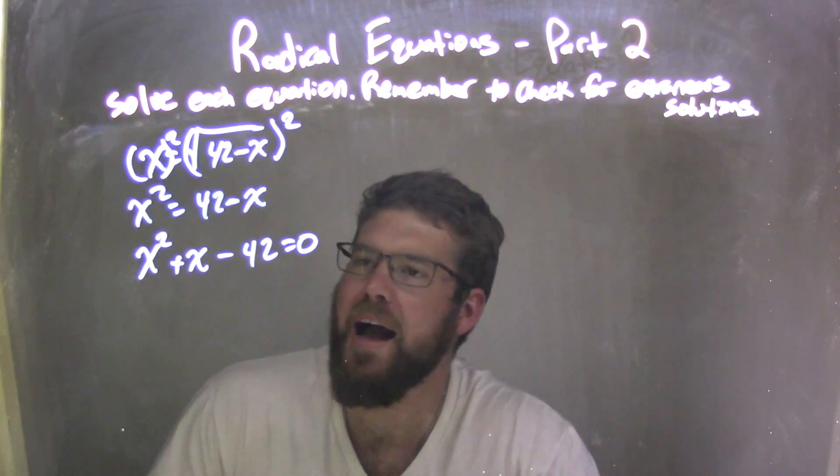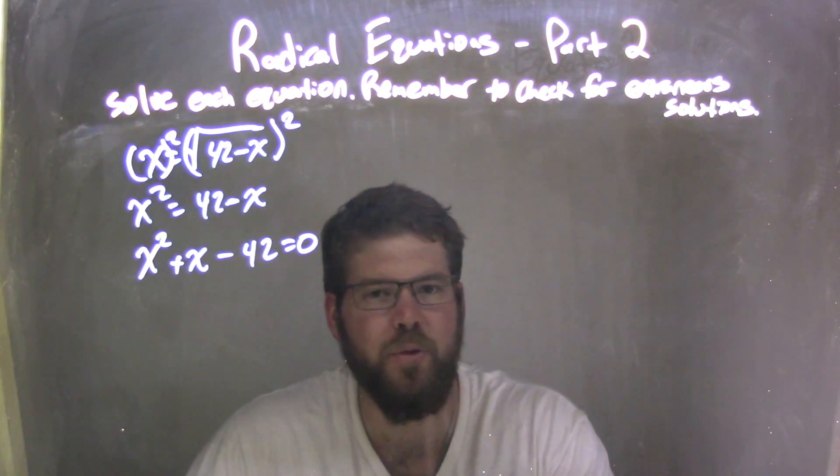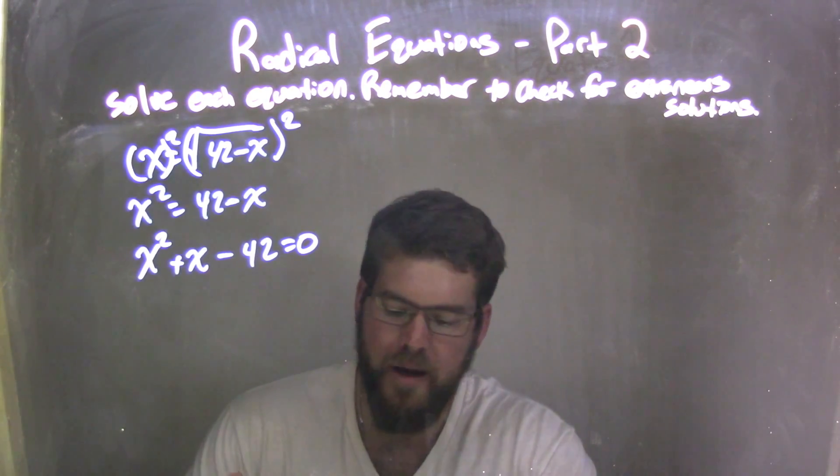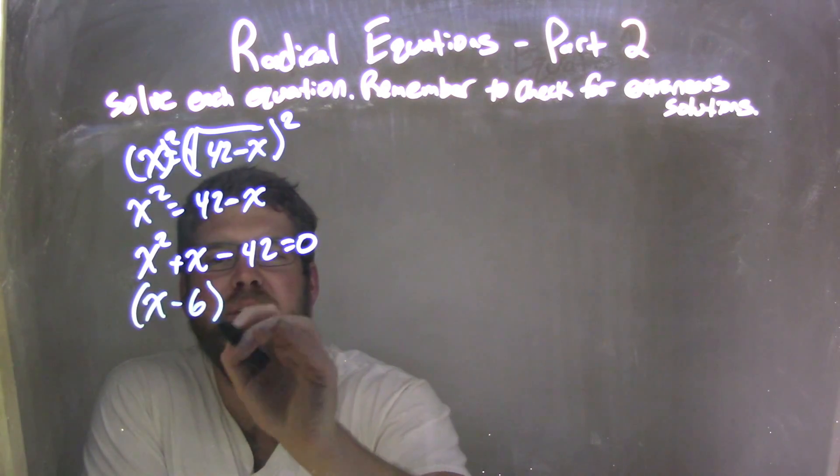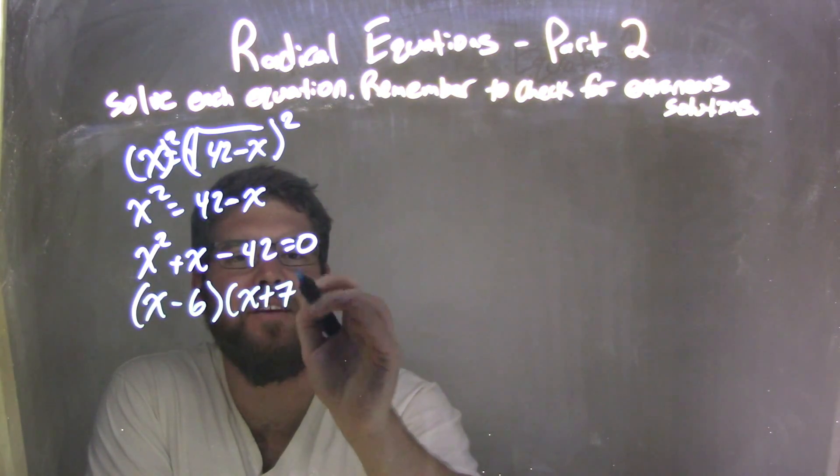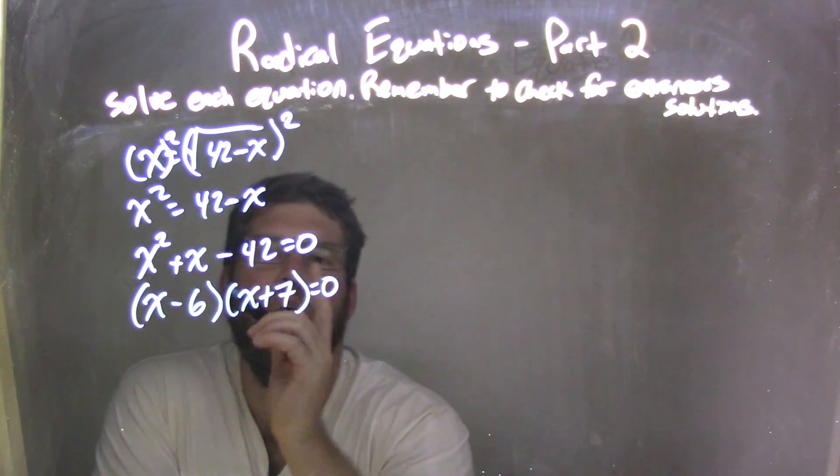From there, I need to factor. What two numbers multiply to be negative 42 but add to be 1? That's negative 6 and positive 7. So I have x minus 6 and x plus 7.